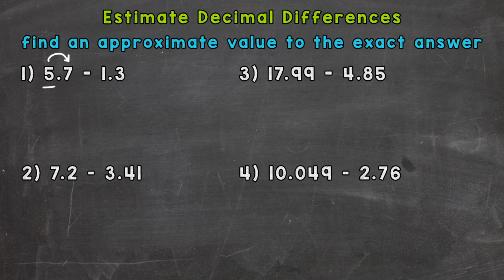So 5.7 rounds to 6. We are basically just saying that 5.7 is closer to 6 than it is to 5. That seven told us to round up. So minus, underline the digit in the ones place, look next door, and that three says stay the same. So 1.3 is closer to 1 than it is to 2. So we can do 6 minus 1 for our estimate, and that is 5.